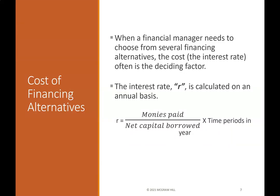Cost of Financing Alternatives: When a financial manager needs to choose from several financing alternatives, the cost — the interest rate — is often the deciding factor. The interest rate is calculated on an annual basis: moneys paid divided by net capital borrowed, times the time period in years.